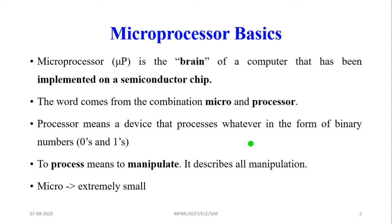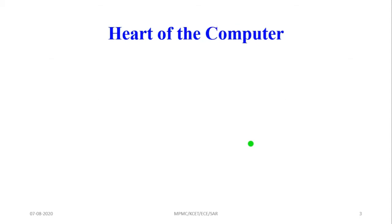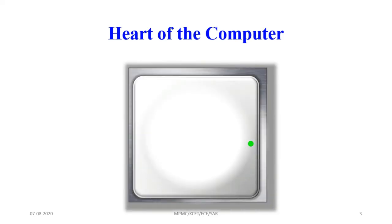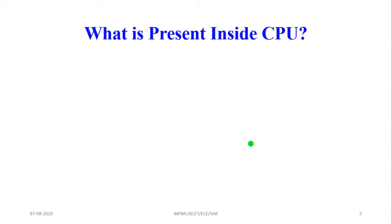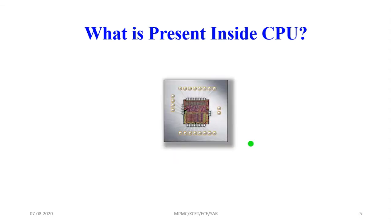How is the microprocessor used in the CPU? The heart of the computer is the CPU — Central Processing Unit. It performs all processing in this central unit, which is why it is called the Central Processing Unit.